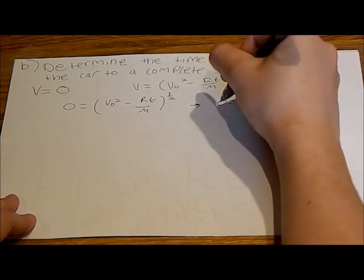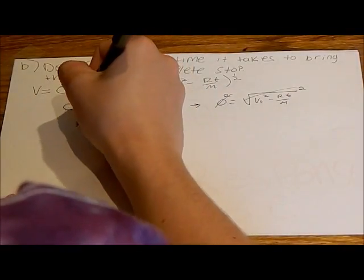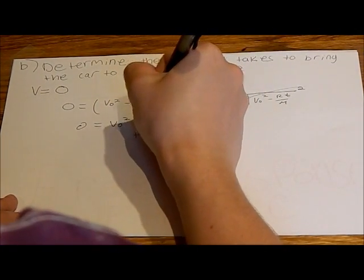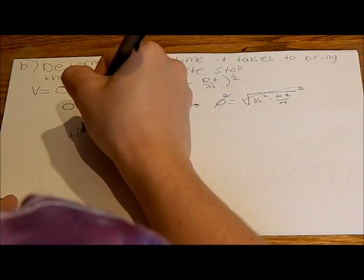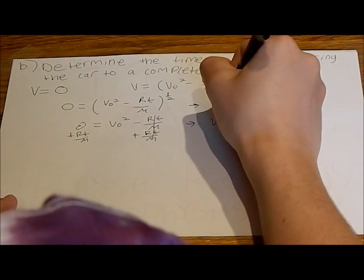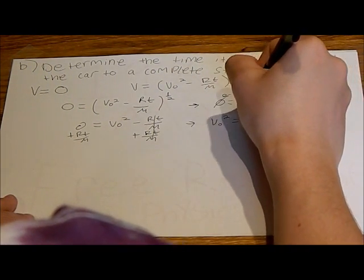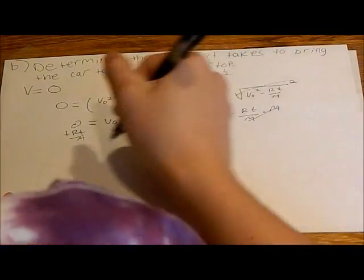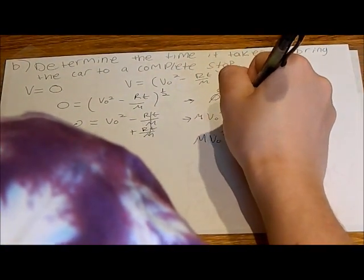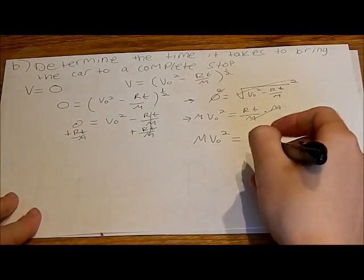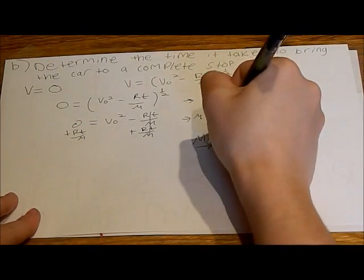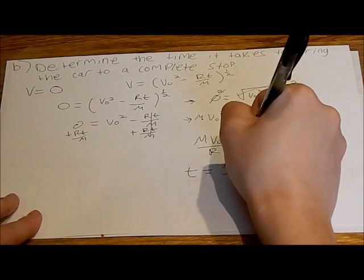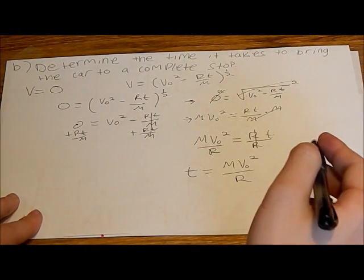Squaring both sides turns it into a straightforward algebra problem: zero equals v-naught squared minus rt over m. Adding rt over m to both sides gives v-naught squared equals rt over m. Multiplying both sides by m gives mv-naught squared equals rt. Since r is a constant, dividing both sides by r gives t equals mv-naught squared over r. That is the time it takes for the car to come to a complete stop.